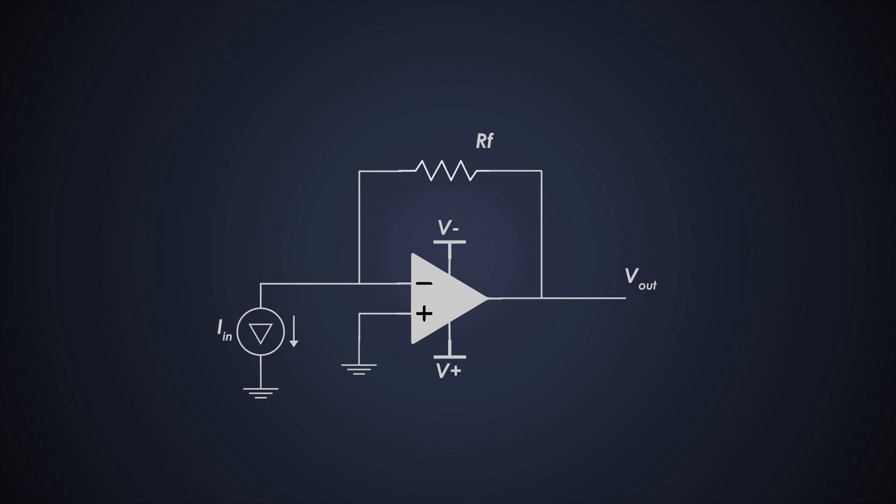Place this feedback resistor between the inverting input and the output of the op-amp. This resistor determines the gain of the trans-impedance amplifier.